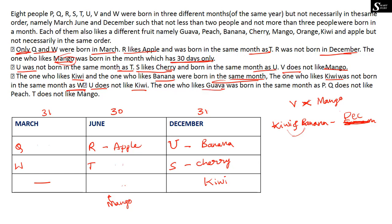The next clue says the person who likes guava was born in the same month as P. If P were in March or December, we could not place a guava-liking companion in the same month given the remaining constraints. So P must be in June. Since guava and mango both have to be in June, guava is assigned to the other June slot alongside P and mango.